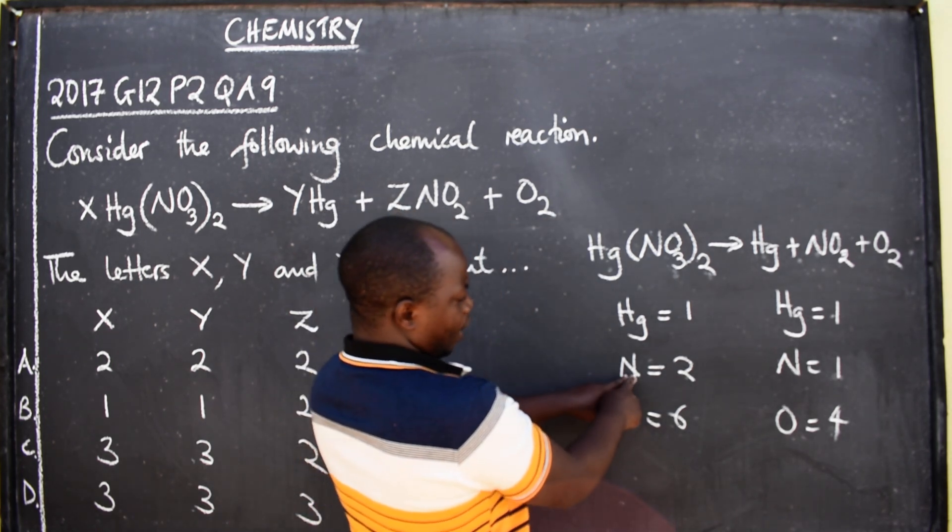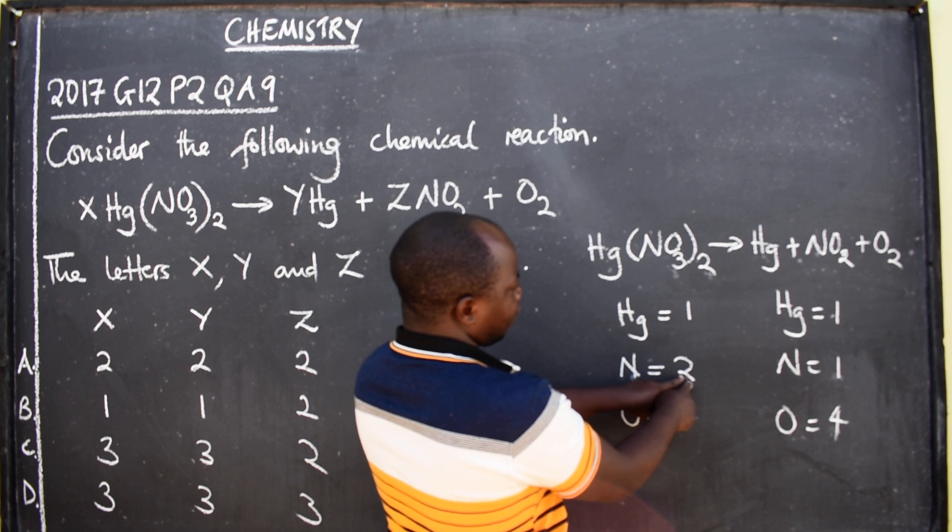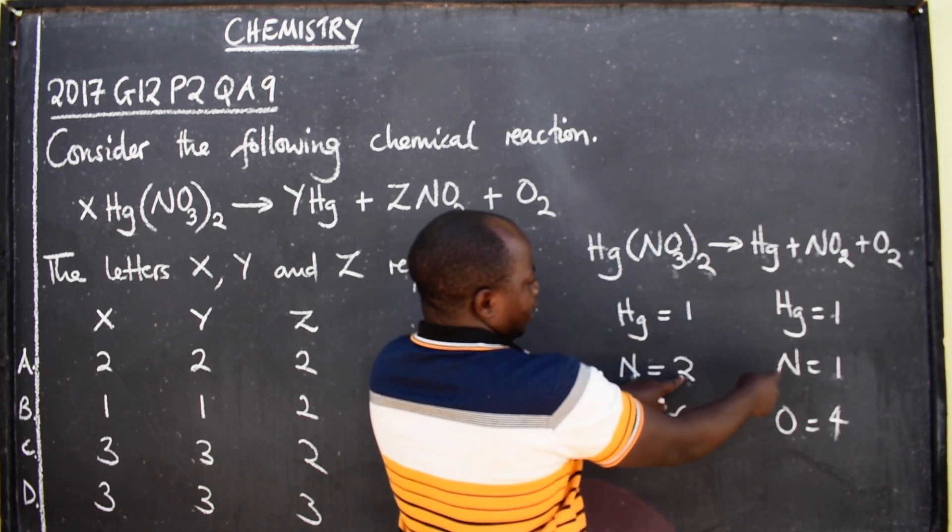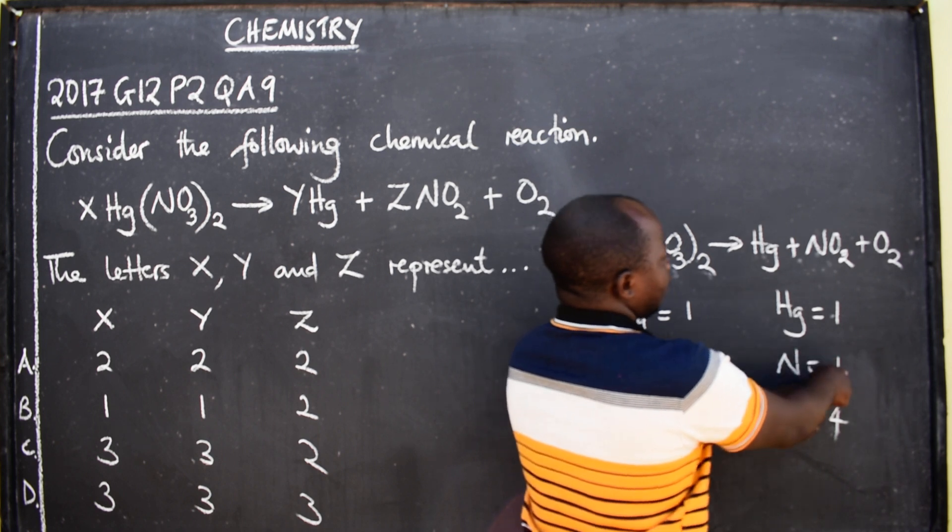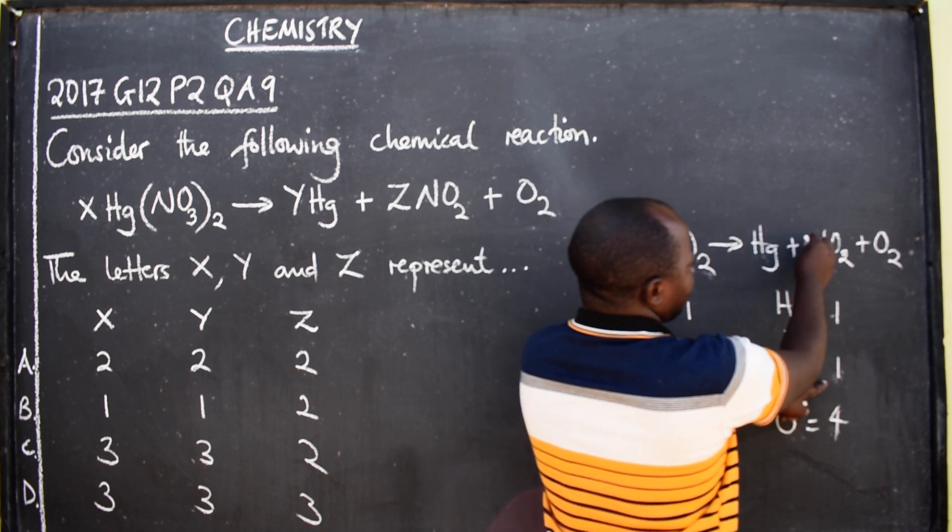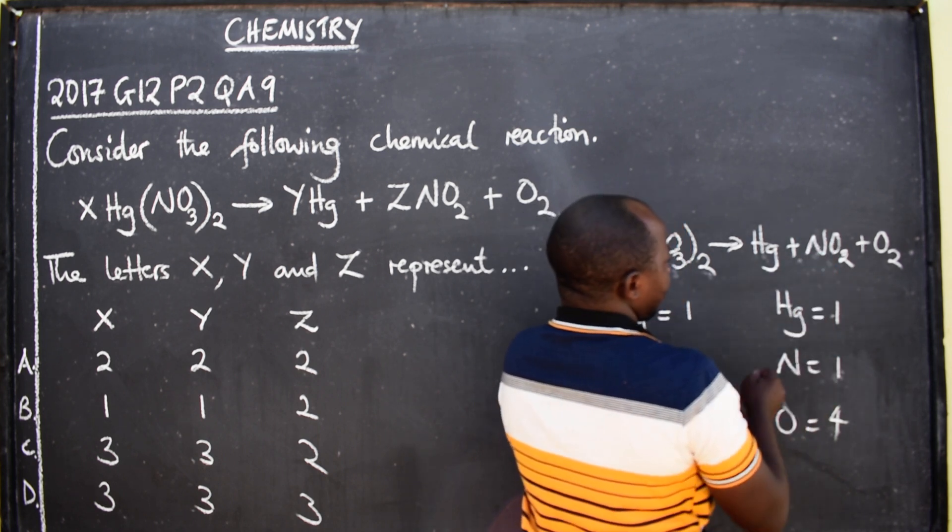For nitrogen, we have two on this side and one on this side. We need a two, so I'm going to put a two here for NO₂.